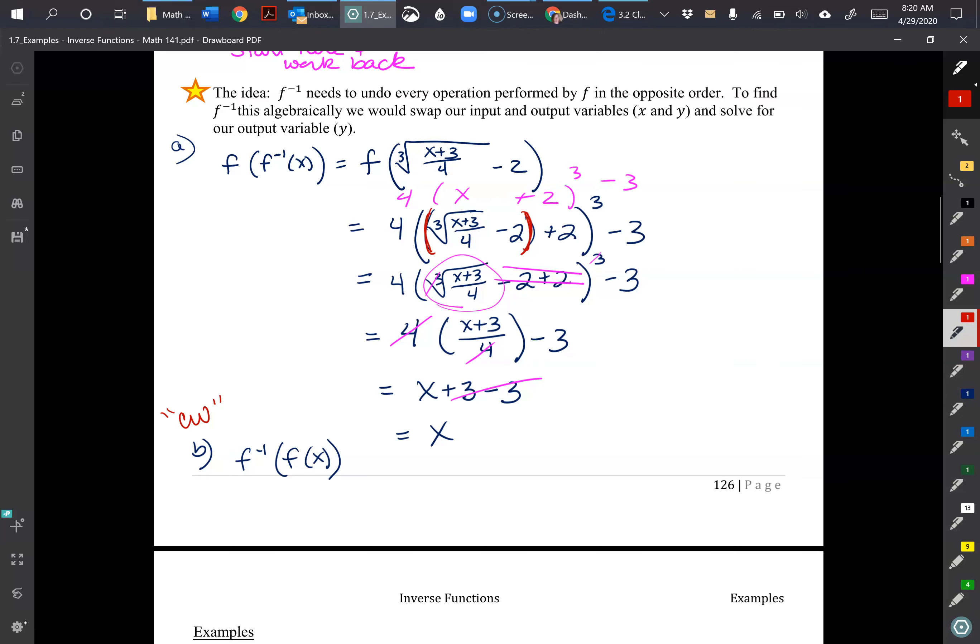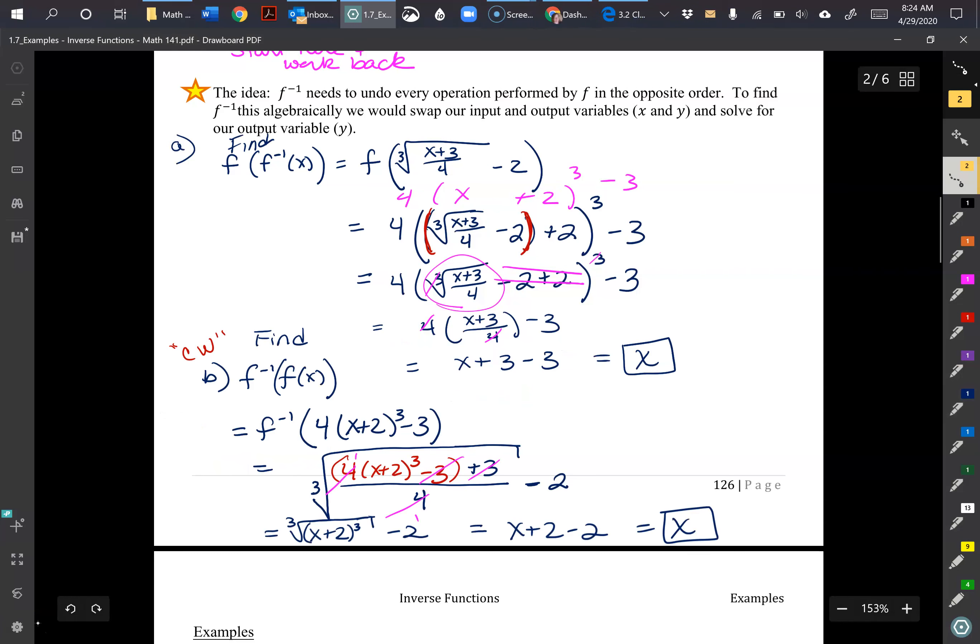Okay, so here's my steps for that. I just took the F of X function, plugged it into my inverse function which we can see is right here actually, so I put that in red in for X. And so I had X, which is now 4 times X plus 2 cubed minus 3.